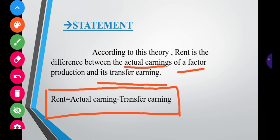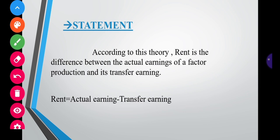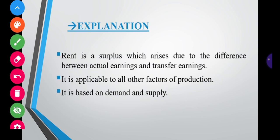Transfer earnings is the minimum payment required to retain a factor in its present occupation or use. Actual earning is the maximum earning. If we deduct transfer earnings from actual earnings, we get rent. According to modern economists, this concept is applicable to all factors of production.